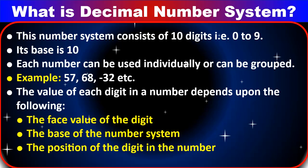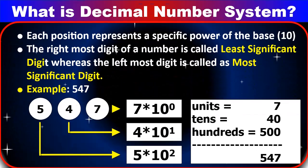The value of each digit in a number depends upon the following: first, the face value of the digit; second, the base of the number system, that is 10; and third, the position of the digit in the number. Each position represents a specific power of the base 10, starting from 0 and onwards, from right to left of the number.